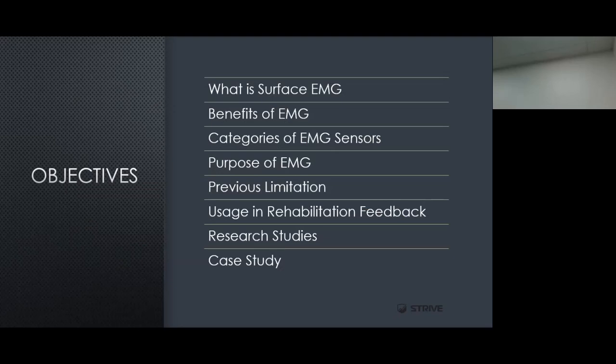Before we get started, I want to review some of the objectives for this final part of the series. We'll quickly review what surface EMG is, talk about some of the benefits and categories of EMG sensors, discuss the purpose of utilizing EMG, some of the previous limitations, how the EMG technology has evolved, and specifically how Strive Tech has taken it a step further. Then we'll focus on usage in rehabilitation as a feedback technology, go over some research studies, and finally review some case studies involving EMG sensors.